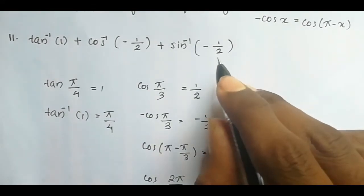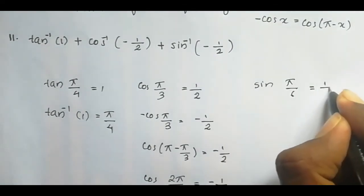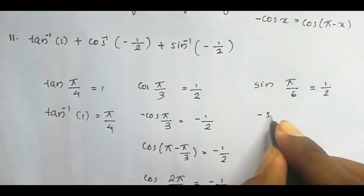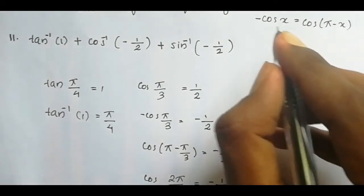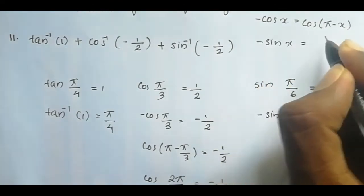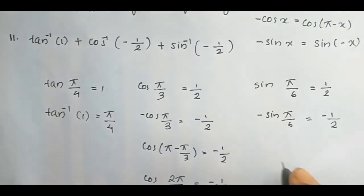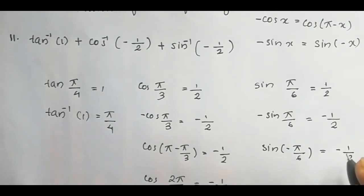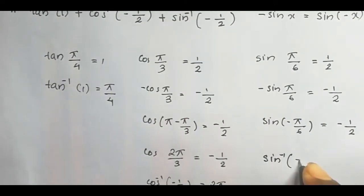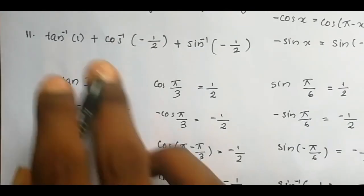For sin⁻¹(-1/2): we know sin(π/6) = 1/2, so -sin(π/6) = -1/2, meaning sin(-π/6) = -1/2. Therefore sin⁻¹(-1/2) = -π/6.